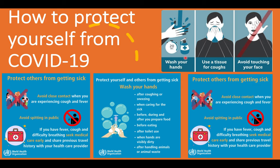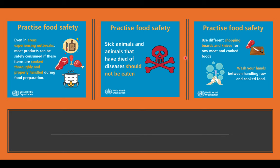Avoid touching your face — especially eyes, nose, and mouth. Use tissues when coughing or sneezing. Practice food safety: eat a healthy diet, and meat products can be safely consumed if cooked thoroughly. Do not eat sick animals or animals that have died of disease. Always cook eggs and meat thoroughly to avoid contamination. Use different chopping boards and knives for raw and cooked foods, and wash your hands between handling foods.